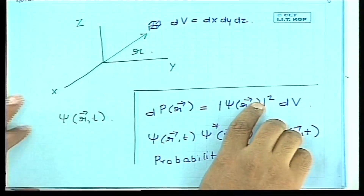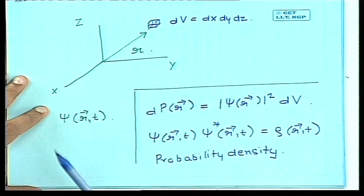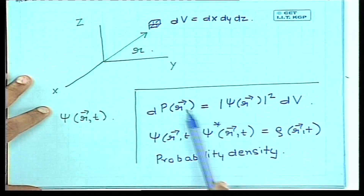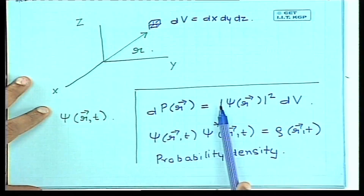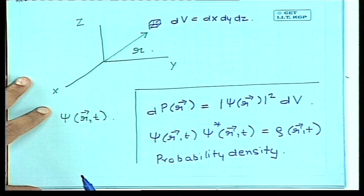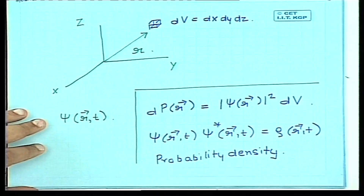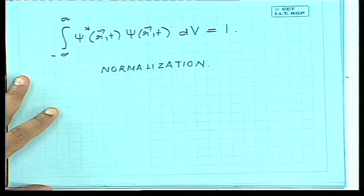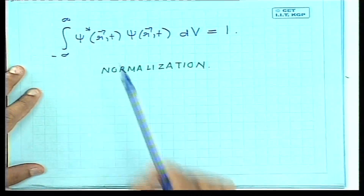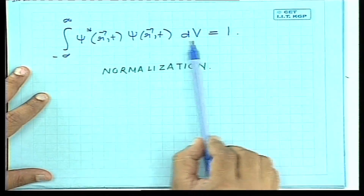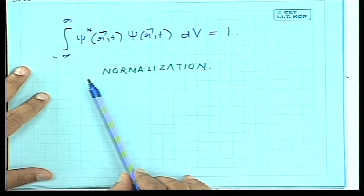The Schrödinger equation governs the wave function ψ. The mod-square of ψ times a volume element dV — where dV = dx dy dz — gives the probability of finding the particle in that small volume. The quantity |ψ|² = ψψ* is denoted by ρ and is called the probability density. The normalization condition states that the integral of ρ over the whole volume equals 1.